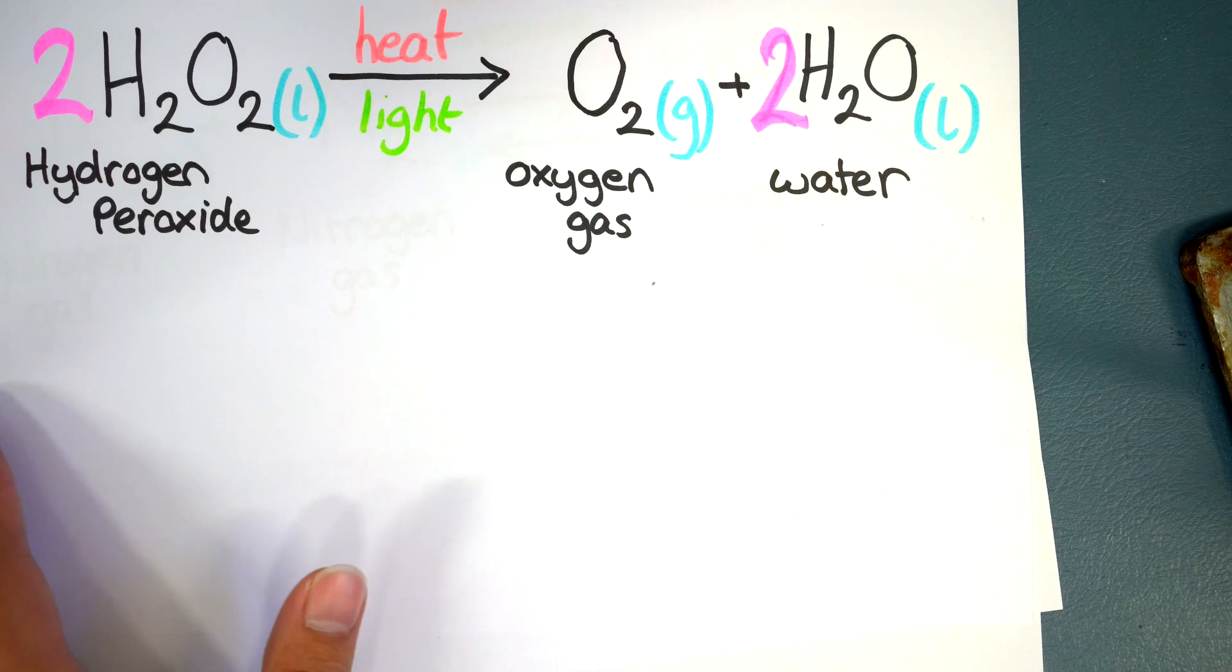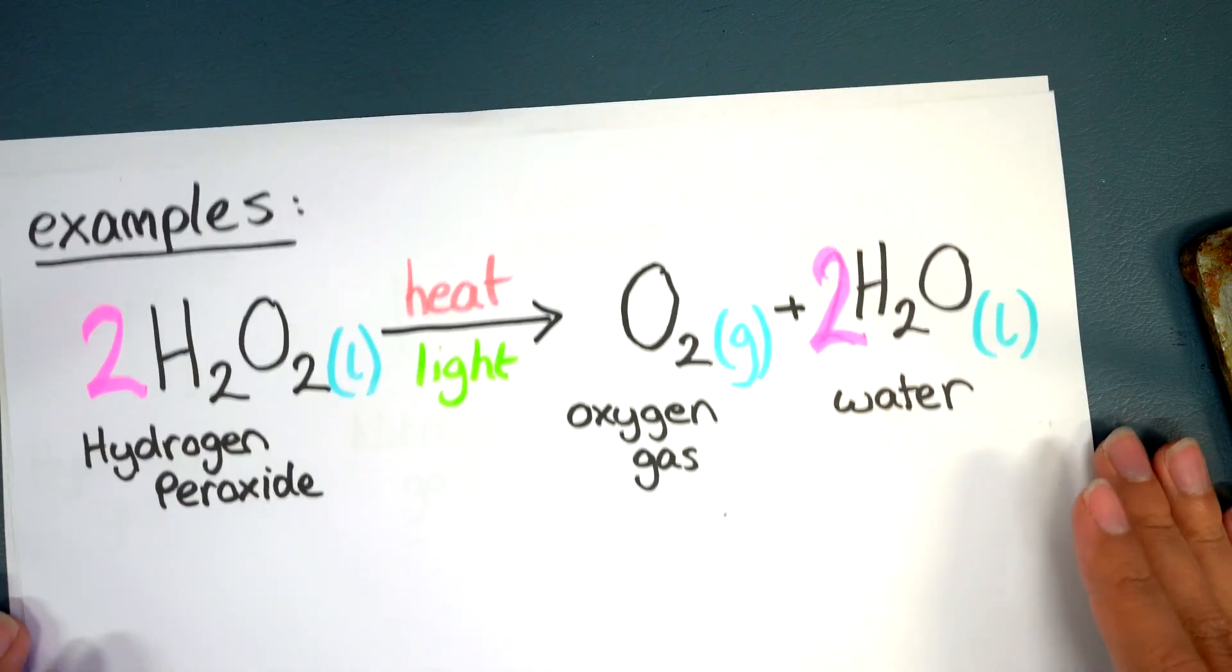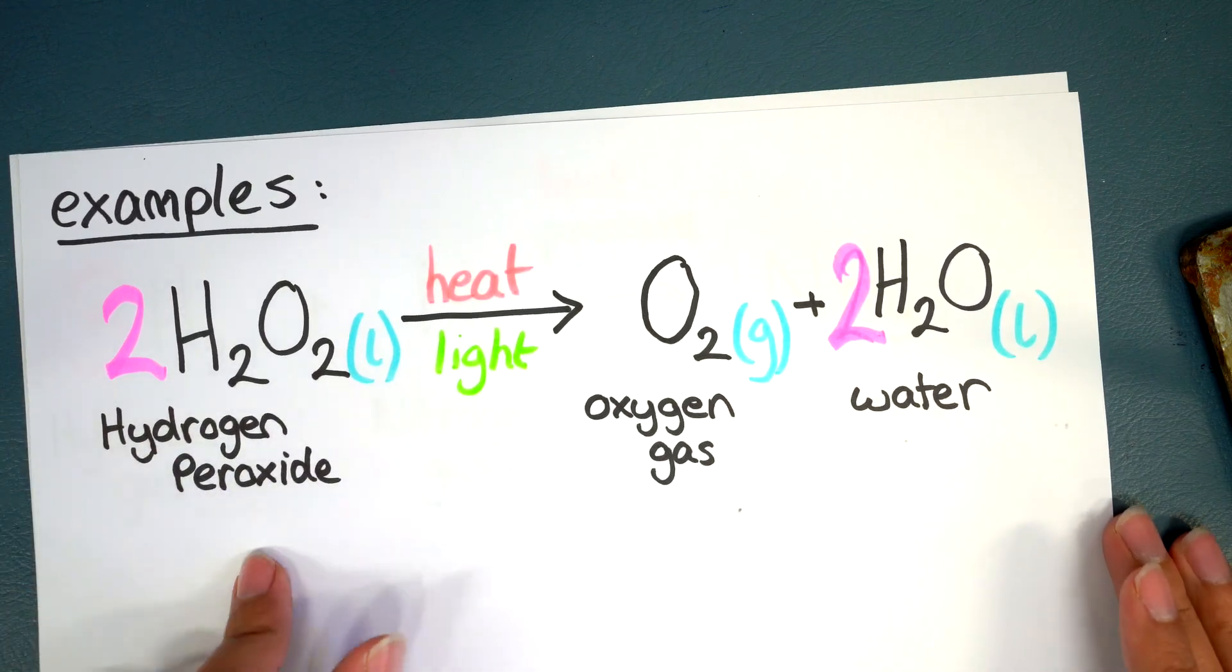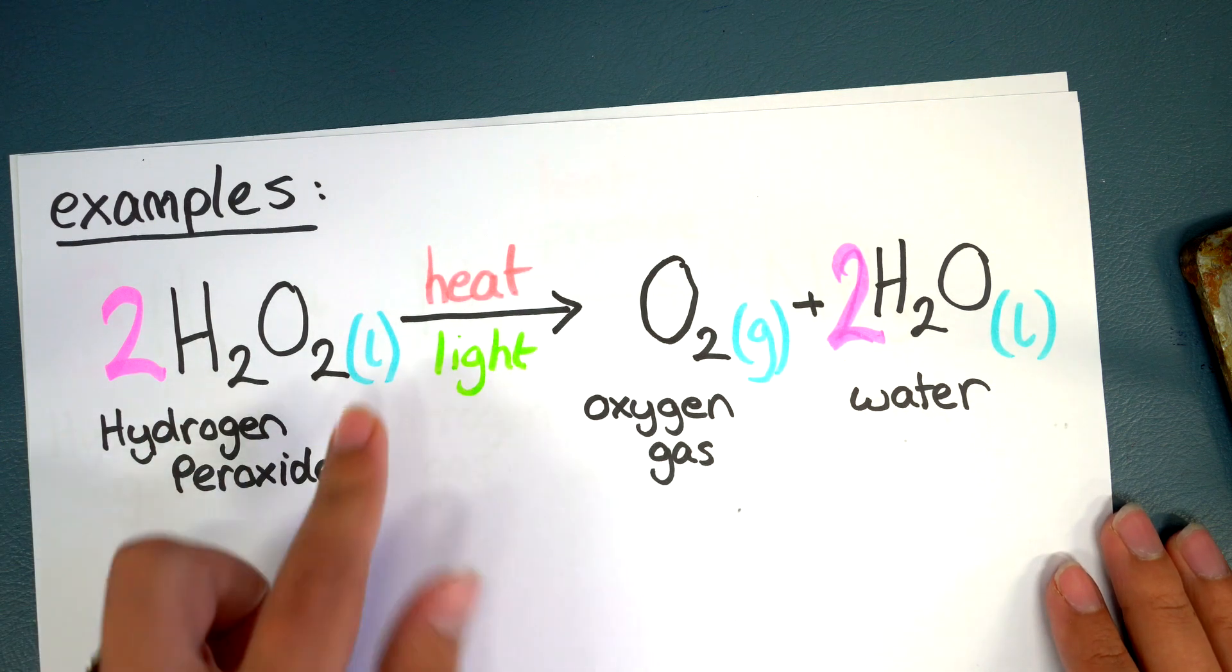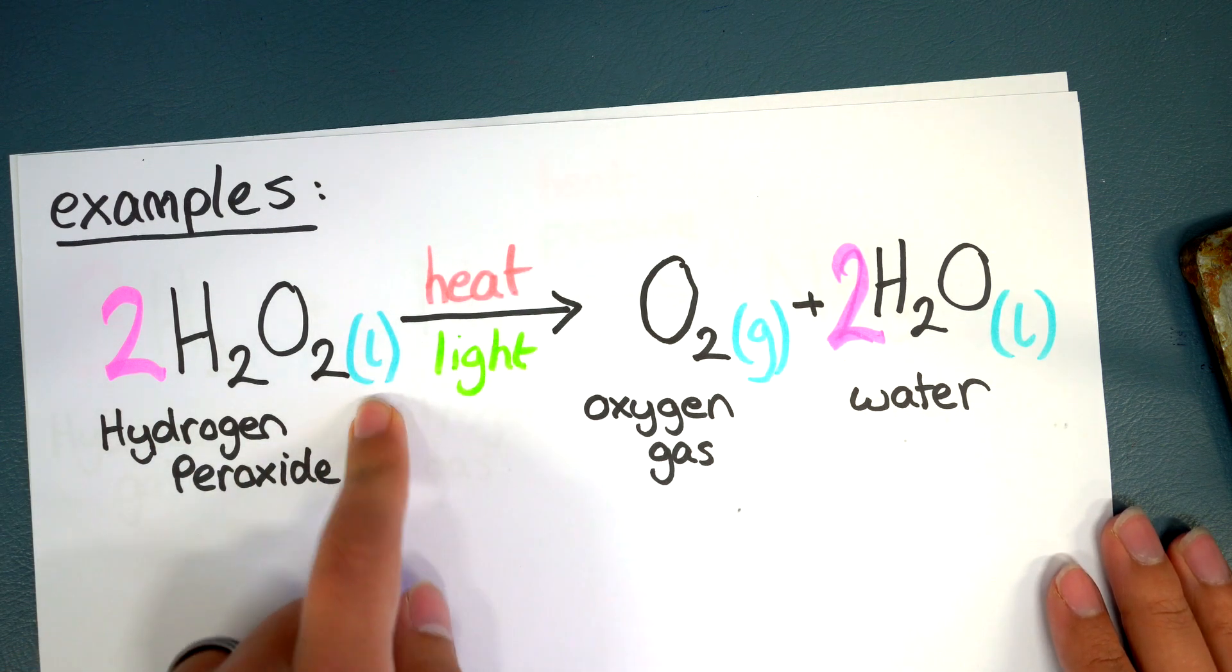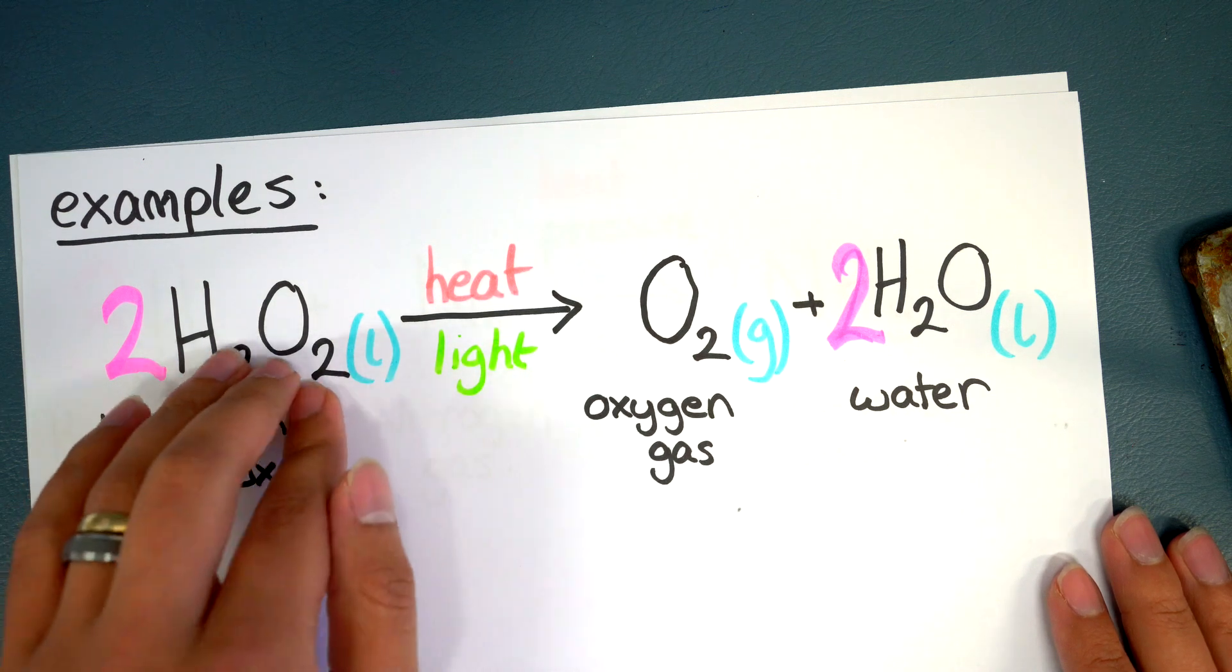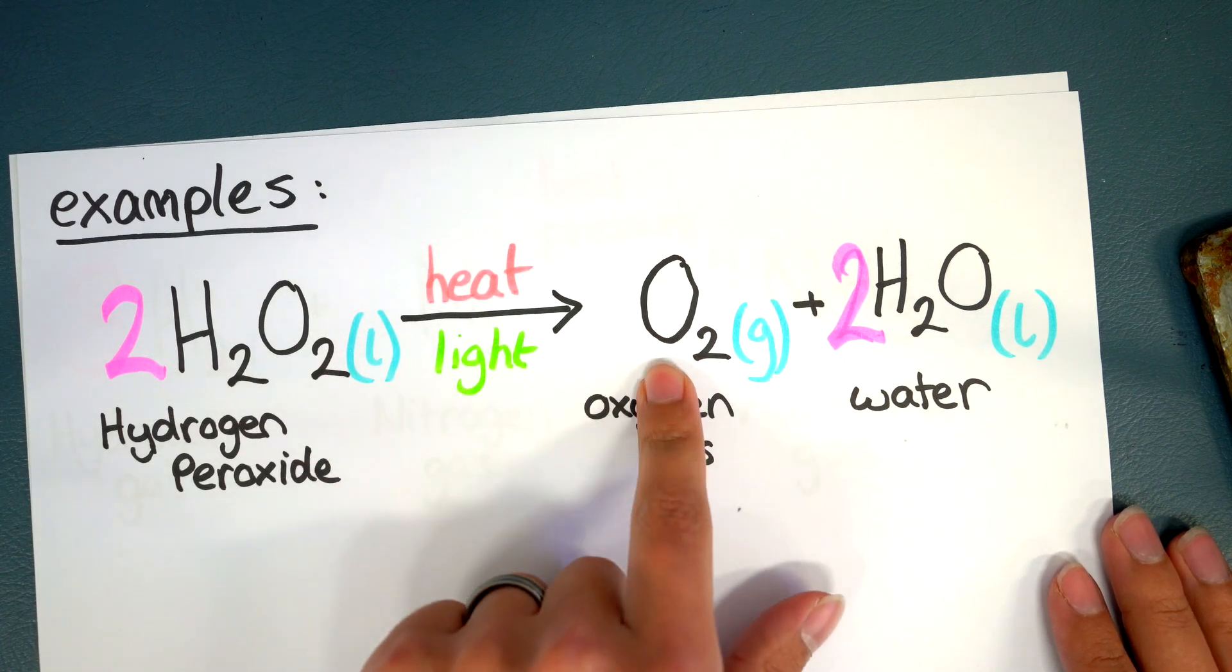So now let's look at some examples. Here I've got the decomposition or decomposing of hydrogen peroxide. So hydrogen peroxide is in liquid state and under the conditions of heat or light it will decompose or break down into pieces into oxygen gas and water.